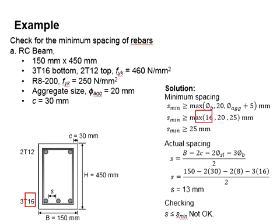So this should be 16, and 20 is given, and 25 is obtained from the aggregate size of 20 plus 5. So the bigger value will be chosen, that means your minimum spacing have to be greater than 25 mm.